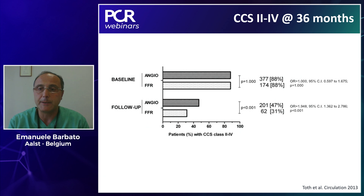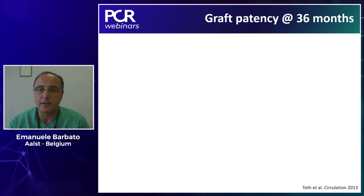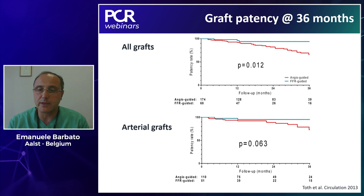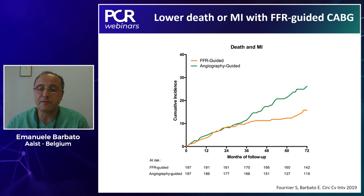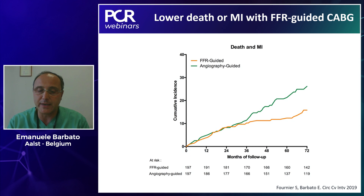Despite receiving fewer bypass anastomoses — translating into incomplete anatomical revascularization — patients in the FFR-guided group did not experience any excess in clinical endpoints up to three years, as suggested by overlapping Kaplan-Meier curves for MACE, TVR, MI, and overall survival. These patients were even better from a symptomatic standpoint: CCS class 2 to 4 angina was significantly lower in the FFR-guided cohort at three years. Graft patency was also superior in the FFR-guided group, though the clinical benefit only became apparent at six-year follow-up.